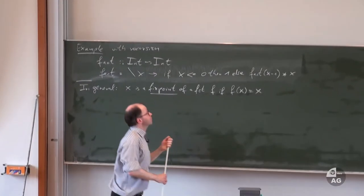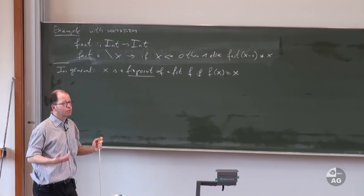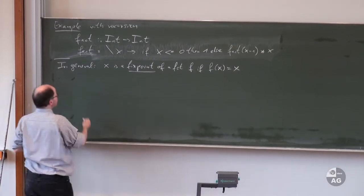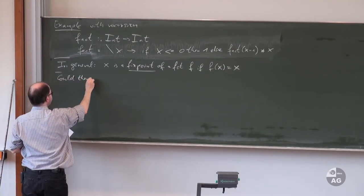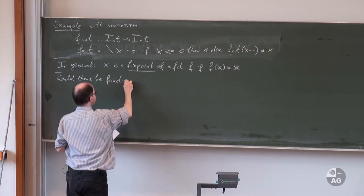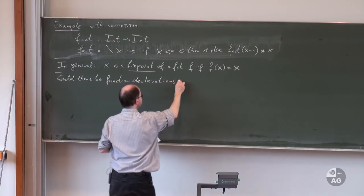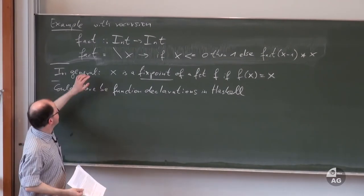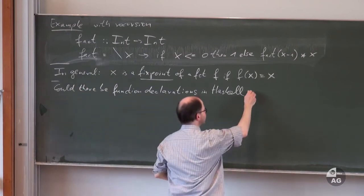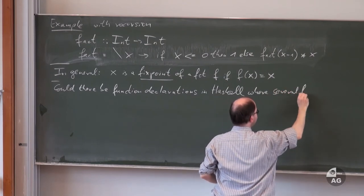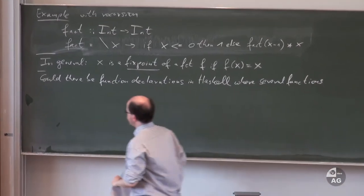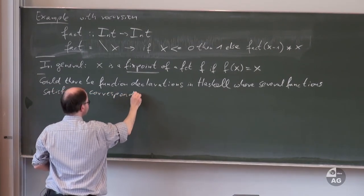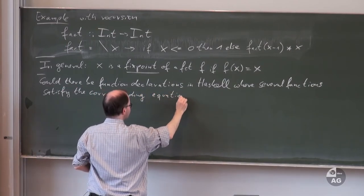Could there be function declarations in Haskell where several functions satisfy the defining equation — i.e., where there are multiple fixed points? Yes, this can happen. Here is an example to illustrate.